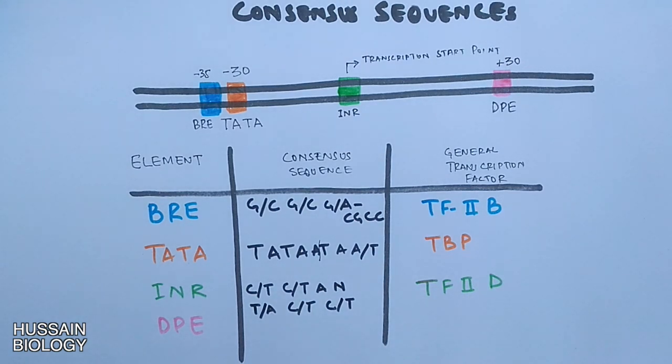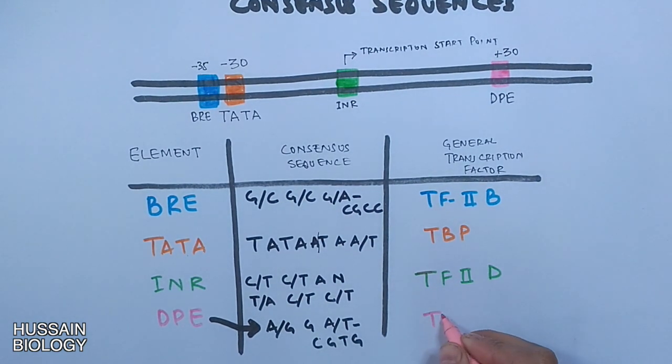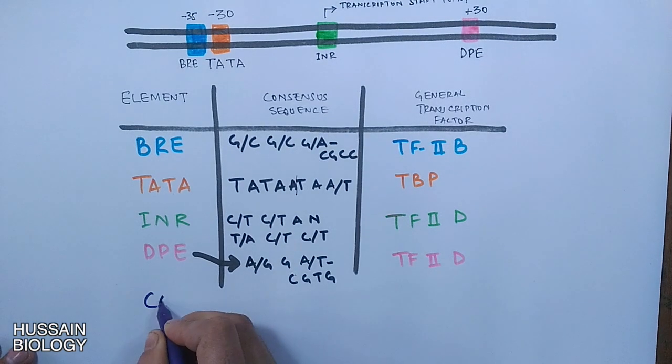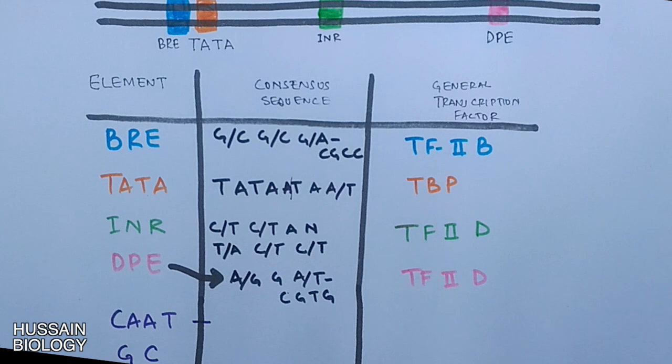Furthermore we have DPE with a sequence shown in the table, and it gets recognized by transcription factor 2D also. And we also have CAAT box and GC box on DNA having sequences shown in the table.